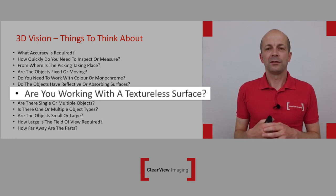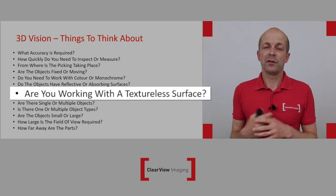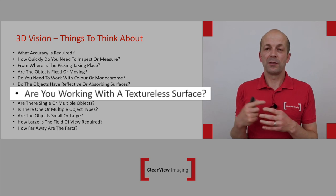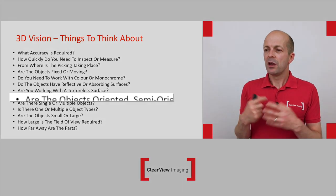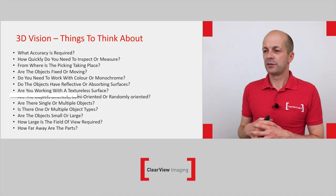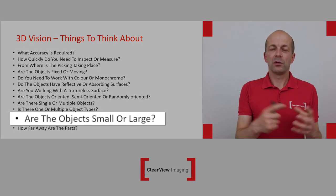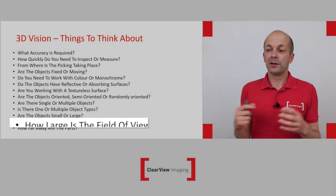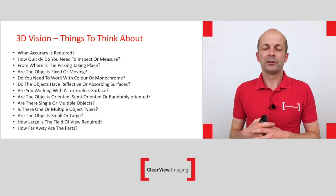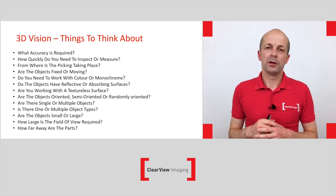What we mean by textureless: the wall behind me would be described as a textureless surface, whereas a scene with lots of edges and information would be described as rich in texture. Are the objects oriented, semi-oriented, or randomly oriented? Are there single or multiple objects, or multiple object types? Are the objects small or large? How large is the field of view required? How far away are the parts going to be? Possibly not an exhaustive list, but certainly a bunch of questions you need to be thinking about when deploying a 3D vision system.